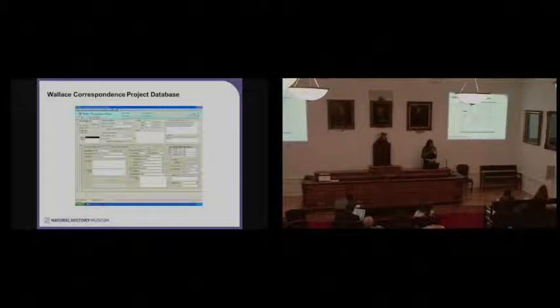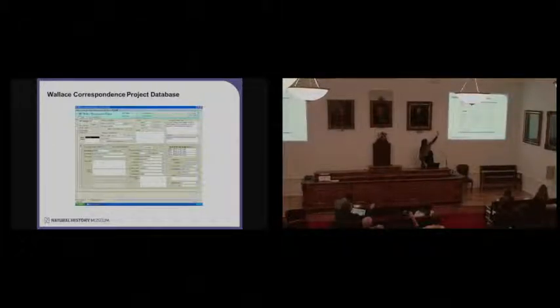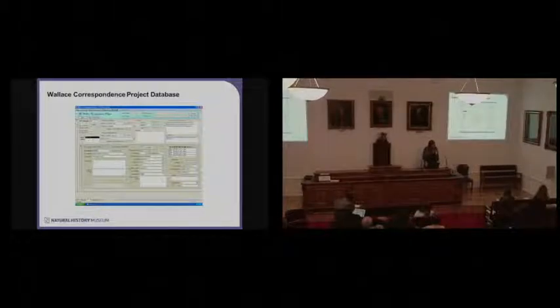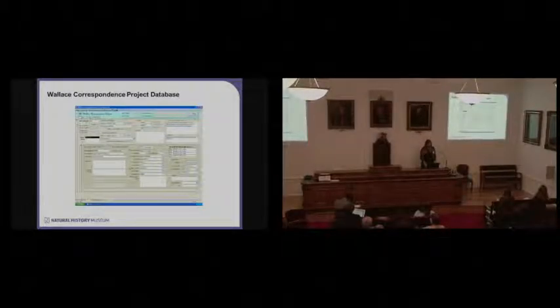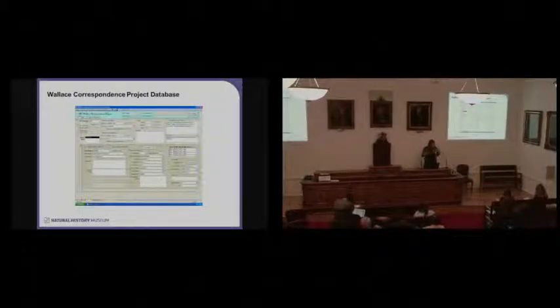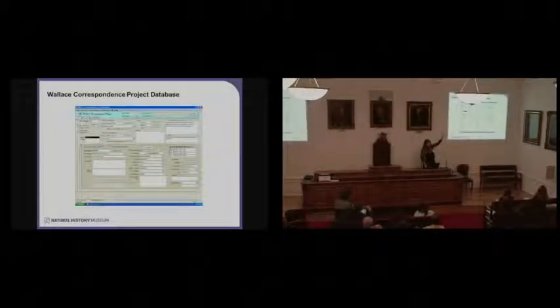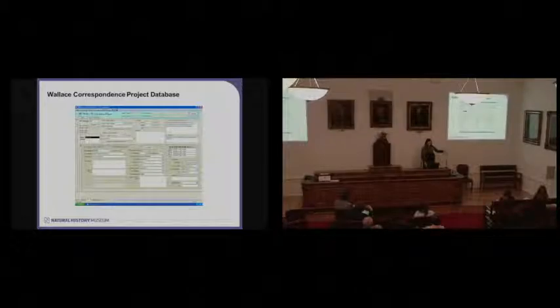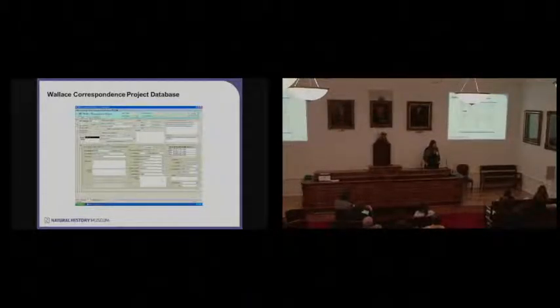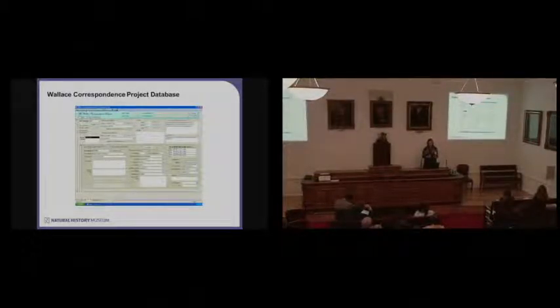And so the work that's involved, this is our behind the scenes project database, which is a bespoke Microsoft Access database, which is what I use. The database has its own record structure, which is made up of the parent, which is the bit you see at the top, and the child. So each parent record has a unique permanent Wallace Correspondence Project number. And the parent record records the letter packets and all the higher information levels, which you can see there, such as the sender and the person you're sending it to, a summary, the date, addresses, all things like that.